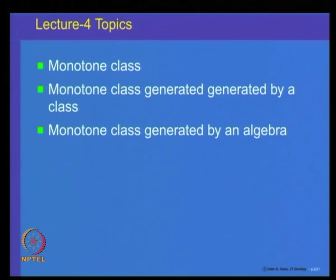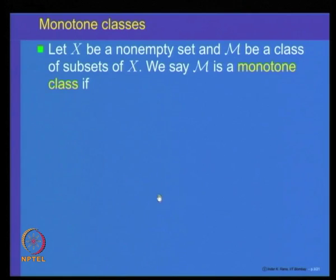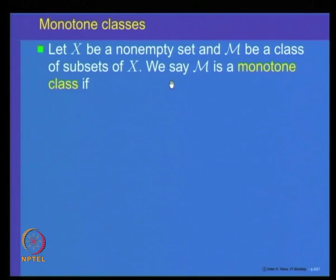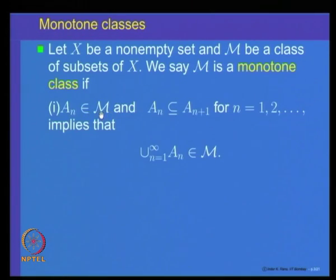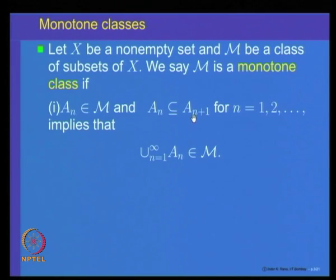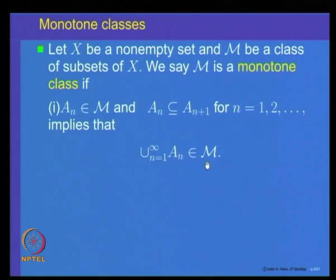A monotone class is a collection of subsets of a set X, denoted M. M is a monotone class if it has two properties. First, whenever there is an increasing sequence of sets A_n belonging to M — meaning A_n is a subset of A_{n+1} for every n — then the union of all A_n also belongs to M. So M is closed under unions of increasing sequences.